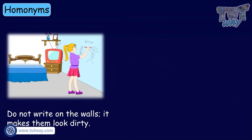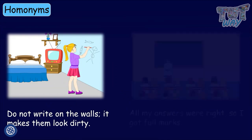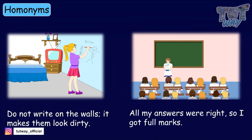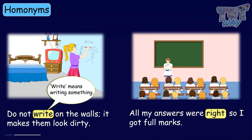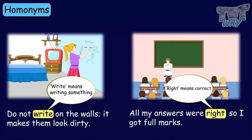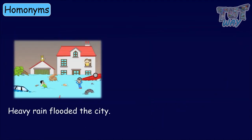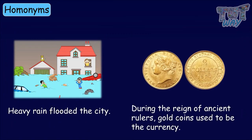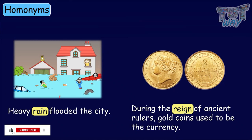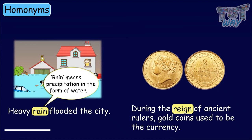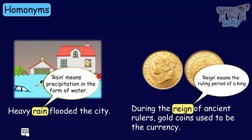Do not write on the walls — it makes them look dirty. All my answers were right, so I got full marks. Write and right have the same pronunciation but different meanings. Heavy rain flooded the city. During the reign of ancient rulers, gold coins used to be the currency. Rain and reign sound similar — rain means precipitation in the form of water, and reign means the ruling period of a king.